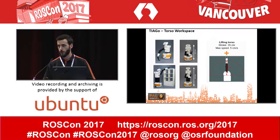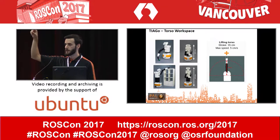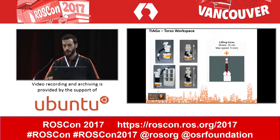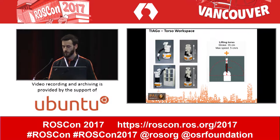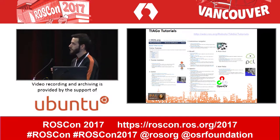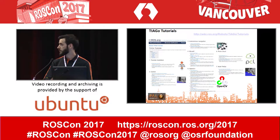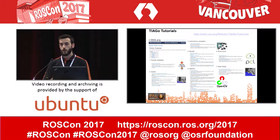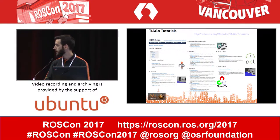The main feature of TIAGo is its workspace — it can pick objects off the floor and place them at around 180 centimeters, about six feet. The workspace is 86 centimeters, roughly three feet, and the torso can lift about 35 centimeters. On the software side, we have a lot of tutorials related to TIAGo and also to ROS control, navigation, MoveIt, OpenCV, and point clouds. We even have multiple TIAGos in Gazebo for collaborative experiments. We are also hiring.